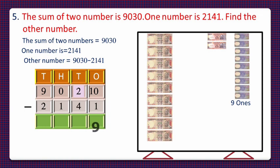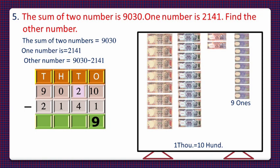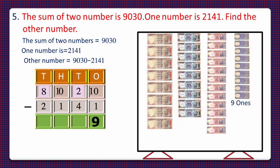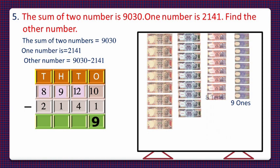Now we have to subtract 4 from 2. Since we can't, we move to hundreds for a borrow, but there are 0 hundreds, so we convert 1 thousand into 10 hundreds — hundreds become 10 and thousands reduce from 9 to 8. Then we convert 1 hundred into 10 tens — tens become 12 and hundreds reduce from 10 to 9. We subtract 4 tens from 12 tens and are left with 8 tens — write 8 in the tens column.